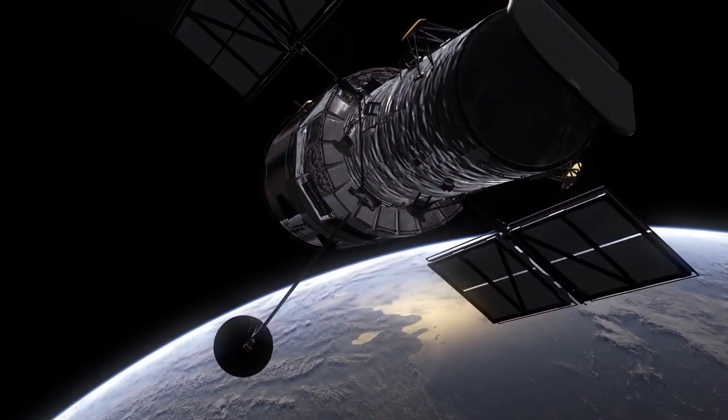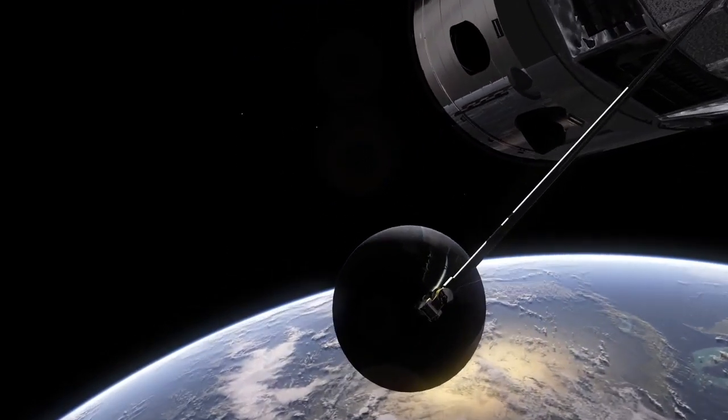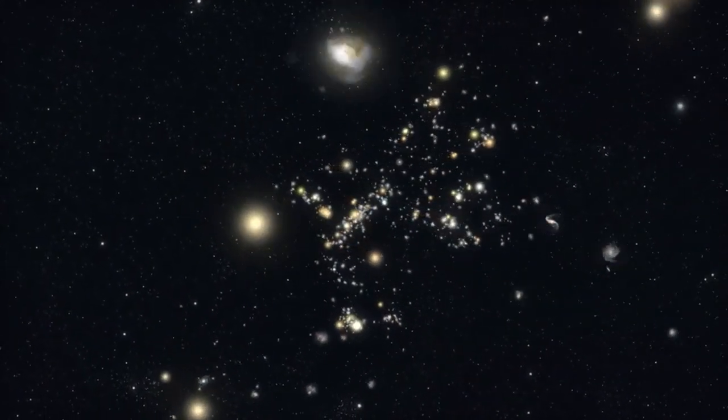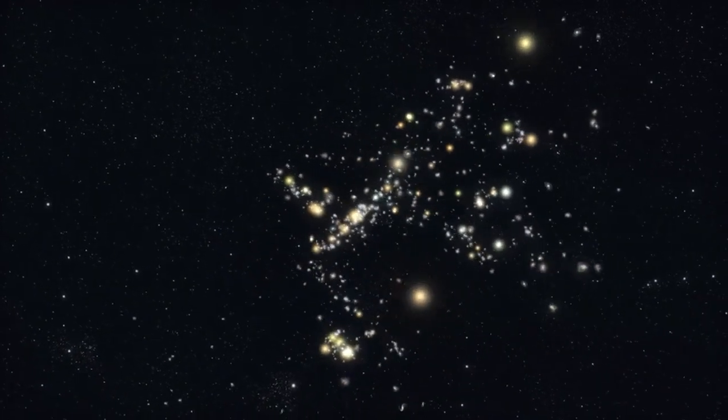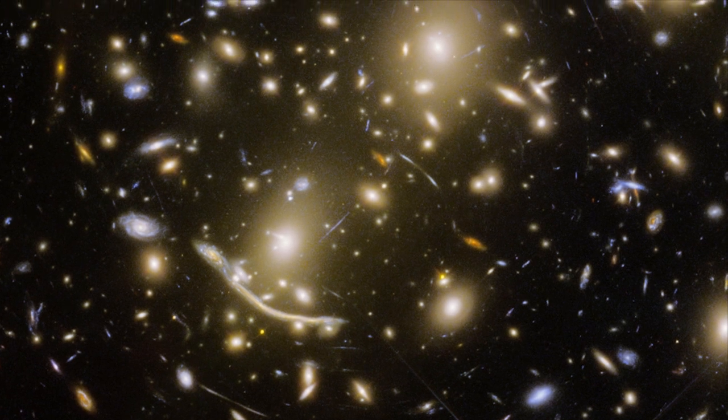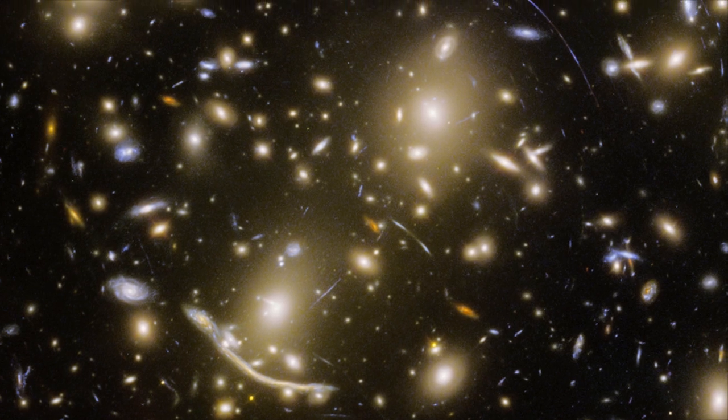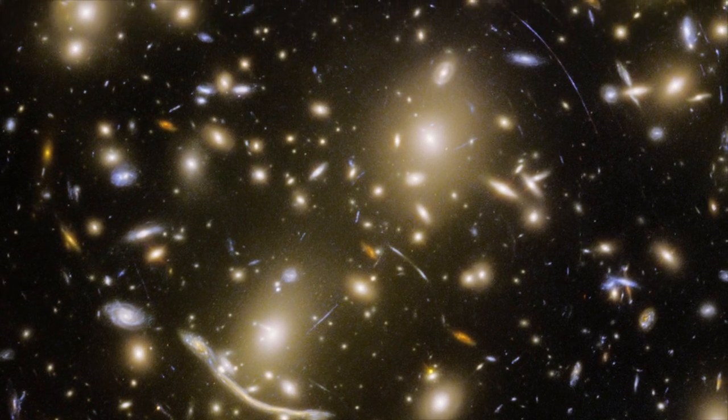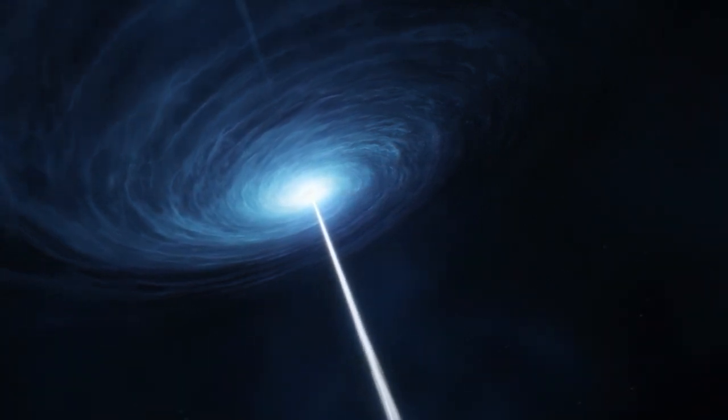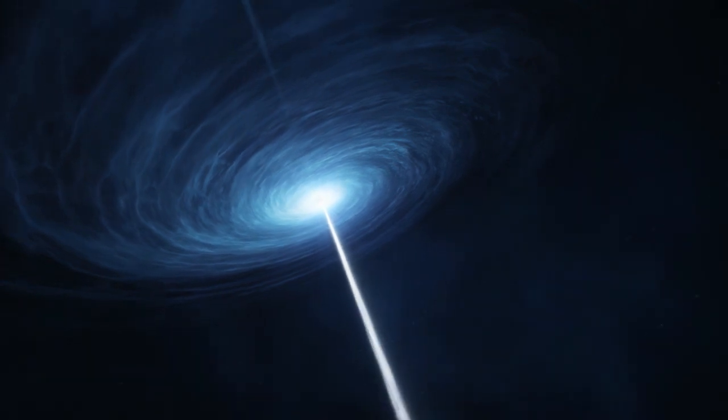While providing some answers, the results Hubble delivered also raised more questions. When and how did the first stars form, and when did the first galaxies appear? How did the radiation of the first stars escape the dusty environment of their parent galaxies to ionize the matter in between galaxies? Were the first stars really powerful enough to re-ionize the universe, or did active black holes play a role as well?